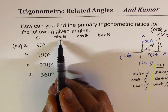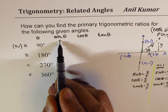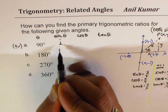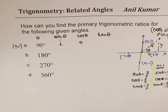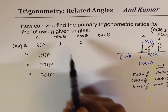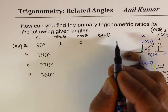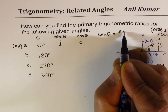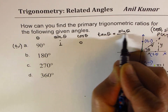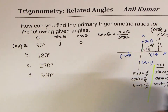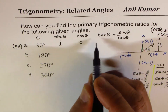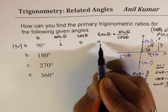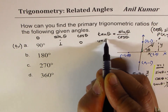Since (0, 1) is the point at 90 degrees, sine theta equals the y value which is 1, and cos theta equals the x value which is 0. Tan theta is treated as sine over cos, which gives us 1 over 0, which is undefined.